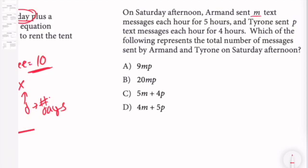On Saturday afternoon, Armand sent M text messages each hour for five hours, and Tyrone sent P text messages each hour for four hours. Which of the following represents the total number of messages sent by Armand and Tyrone on Saturday afternoon? So we want to know the total.